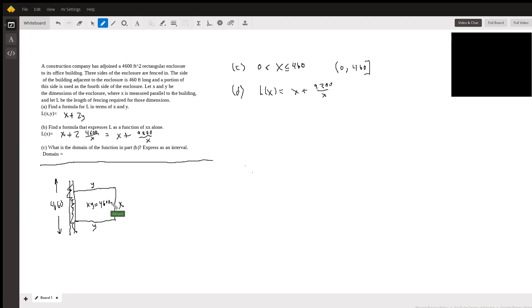So we're basically dealing with these two equations. When we get to part B, we want to write the length of fencing as a function of x only. So we replace y with 4600 over x. So it's 4600 over x times 2, and then it simplifies to that.